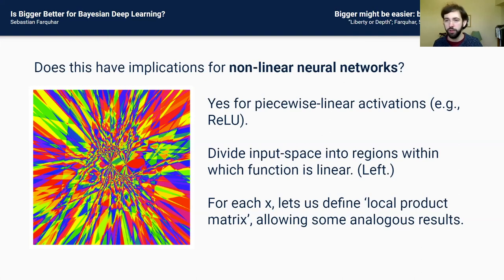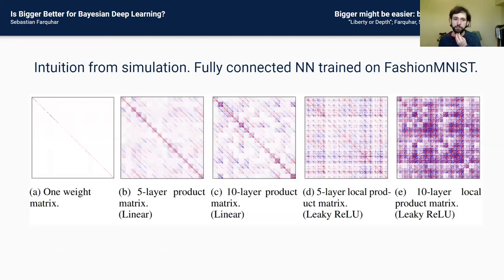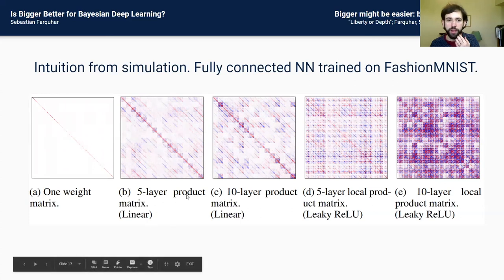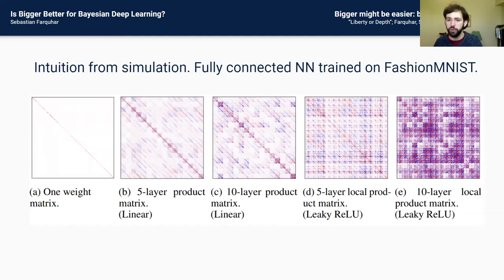We can get some intuition from simulating this. We trained a neural network on Fashion-MNIST with variational inference and plotted the covariance matrix of the parameters. With only one layer, the covariance is diagonal by construction. As you add more layers, you start getting interesting off-diagonal patterns. Panels D and E show this for local product matrices at one spot in input space — suggesting the analysis from the linear case extends to the nonlinear case.